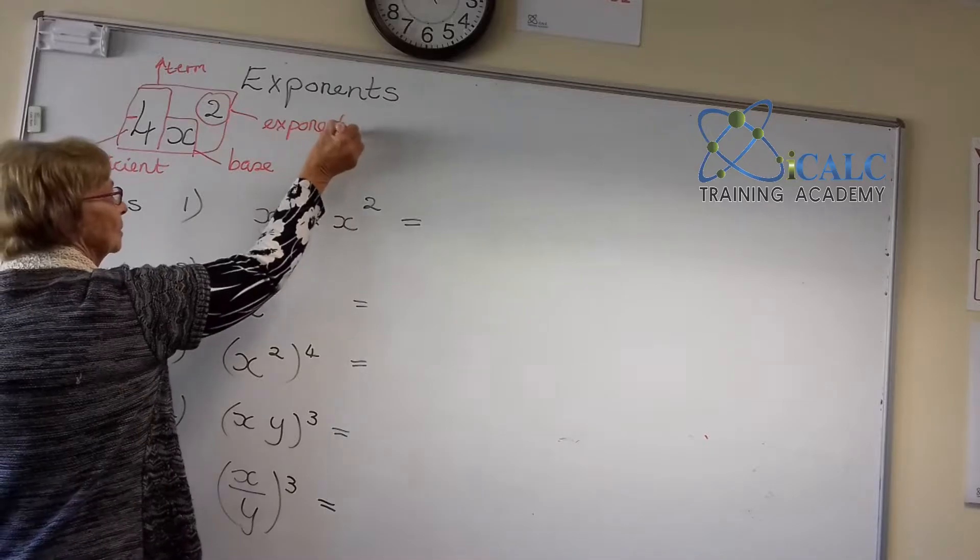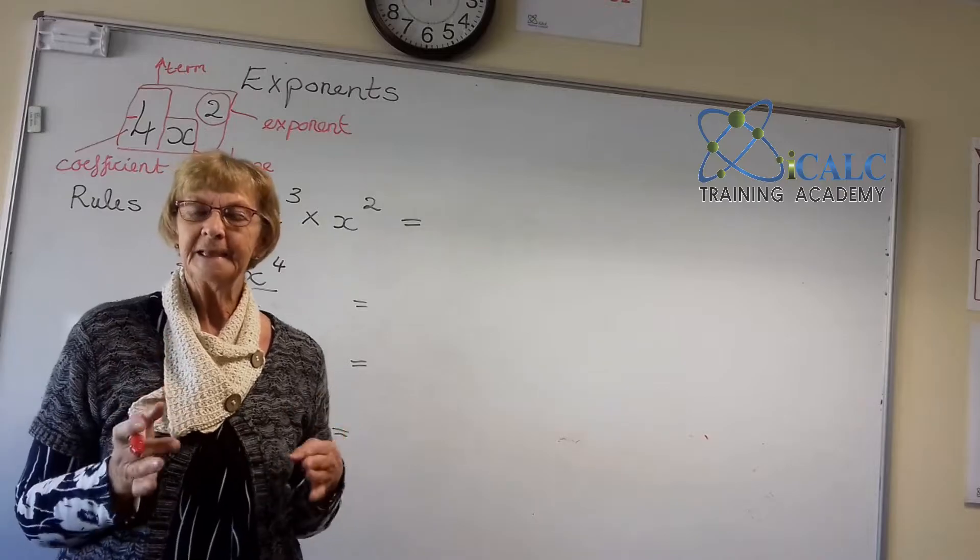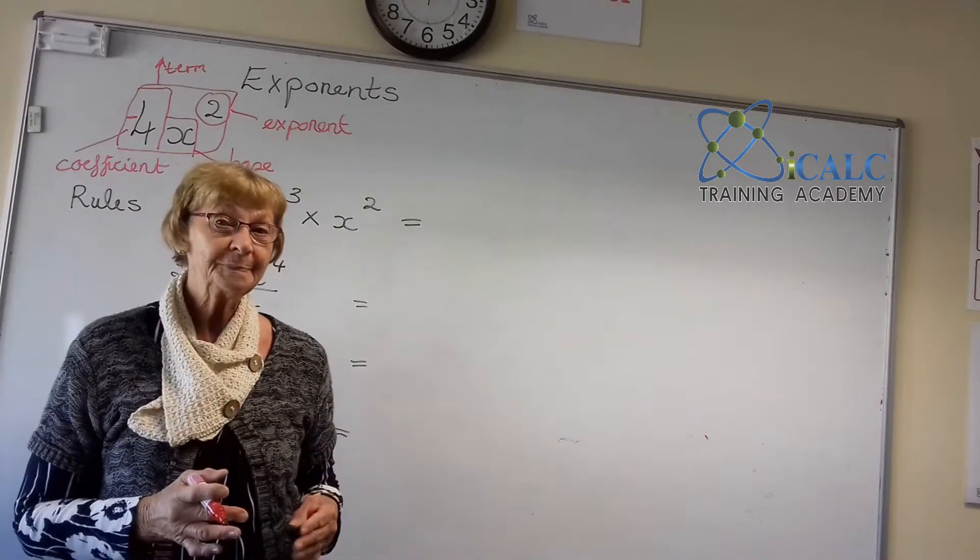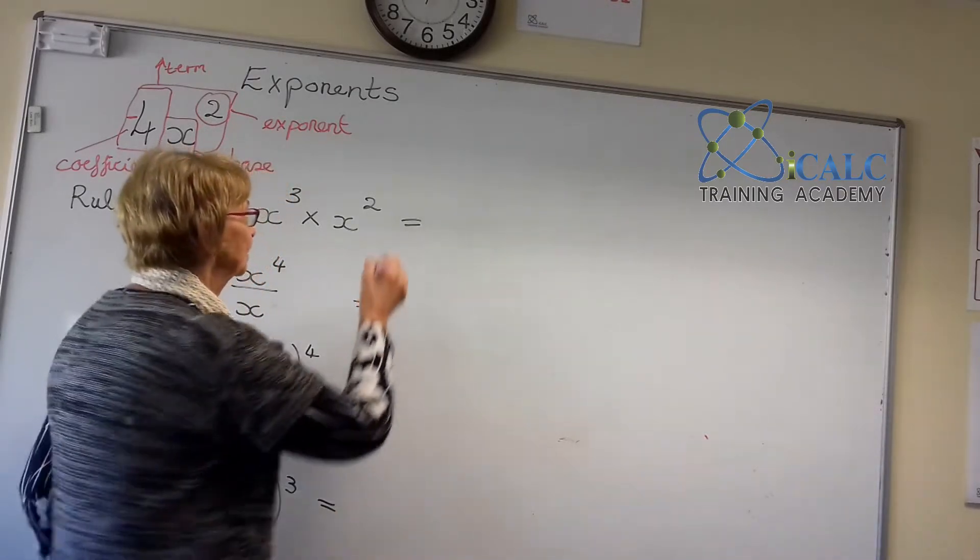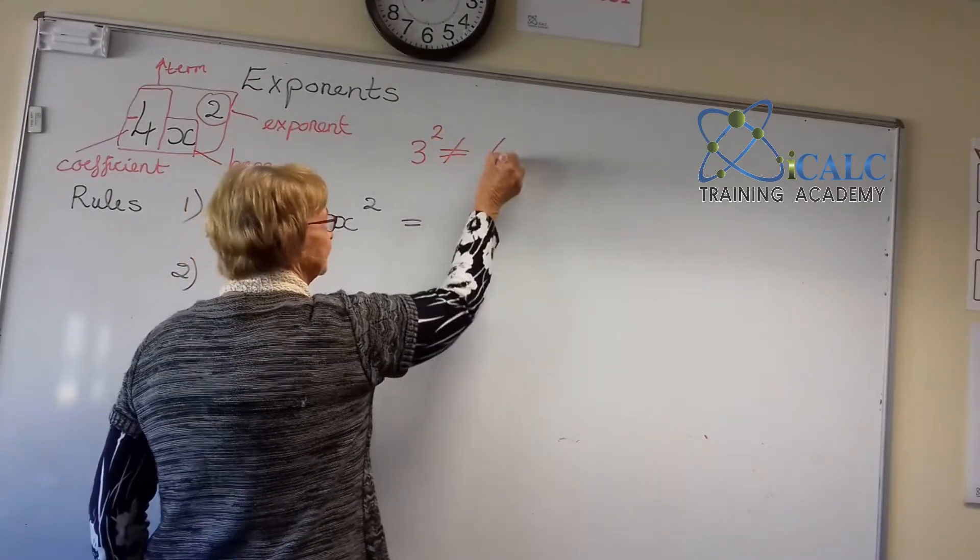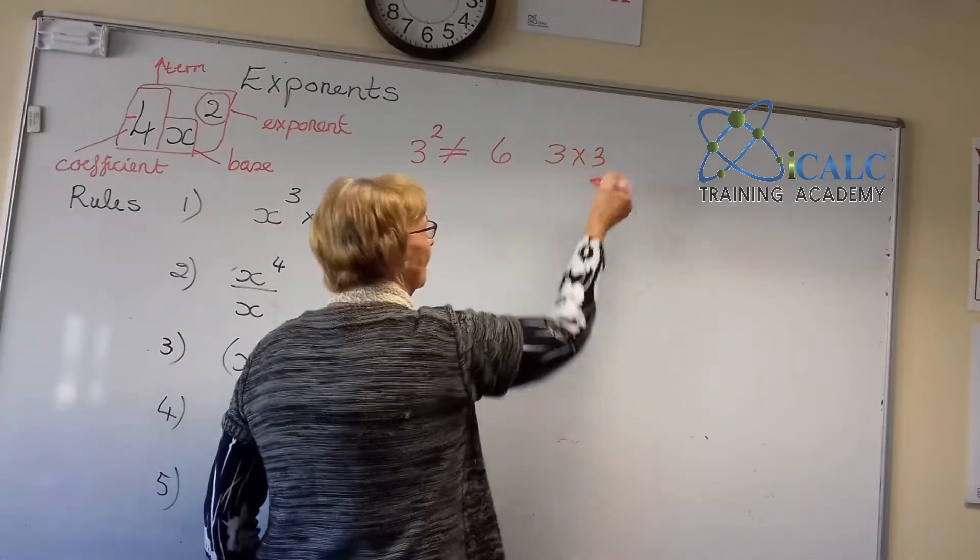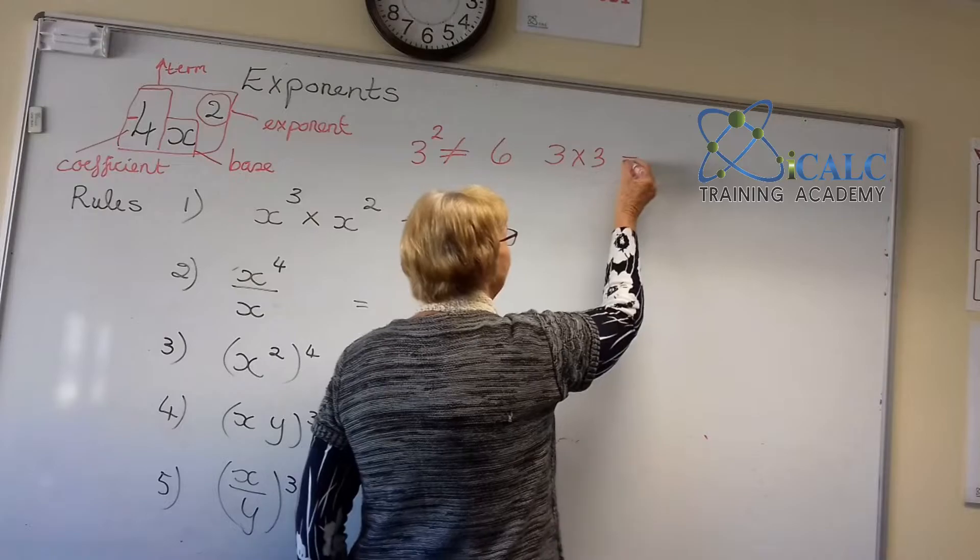Now what does the exponent mean? The exponent means the number of times that I will take that number and multiply it by itself. So if I have 3 squared, it is not 6, it means 3 times itself twice, which gives me 9.